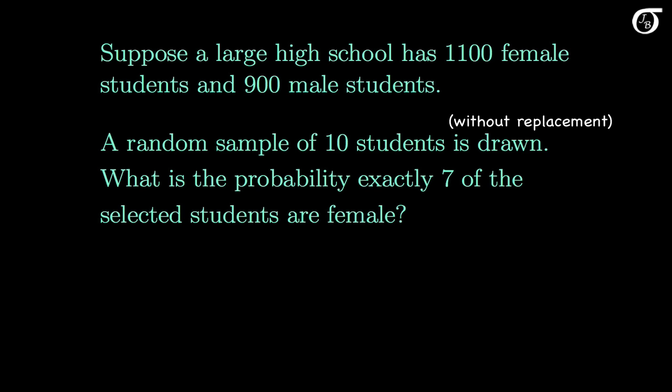To 6 decimal places, this works out to 0.166490. If you need to use the formal probability mass function, capital N is the total number of students, which is 2,000; little n is the number sampled, which is 10; and a is the total number of successes in the population — since we're counting females, a equals 1,100. Plugging these into the formula gives the same result. It might be informative to try that once, but most people find it easier to just think it through logically and not rely on the formula.